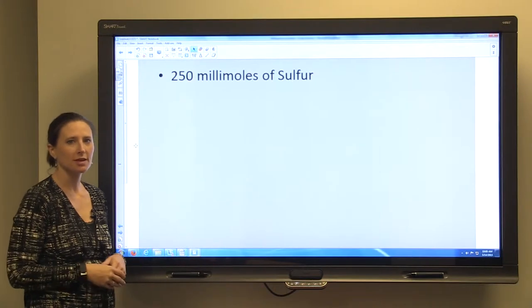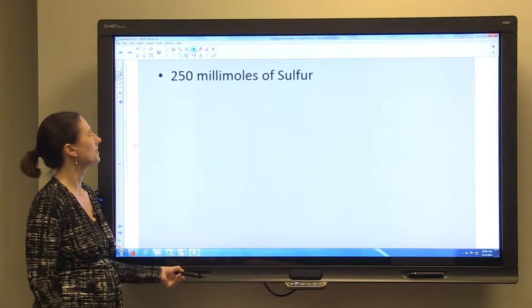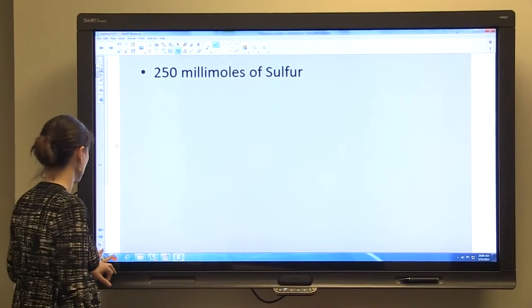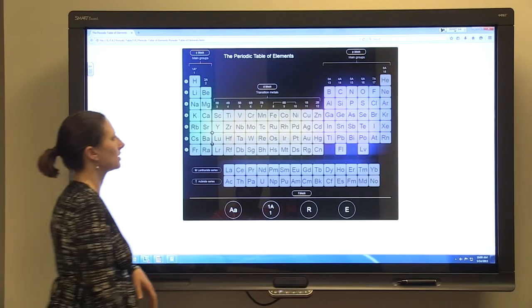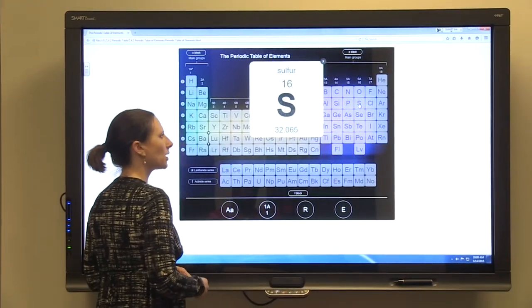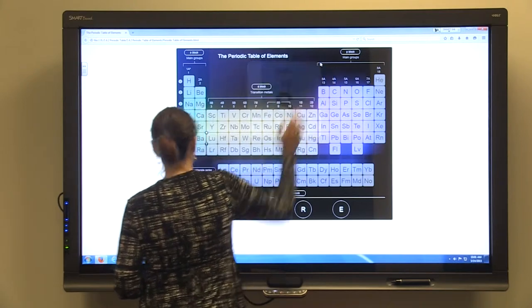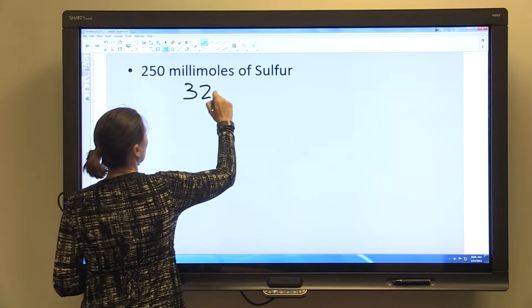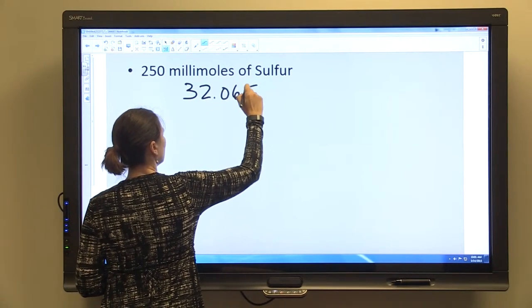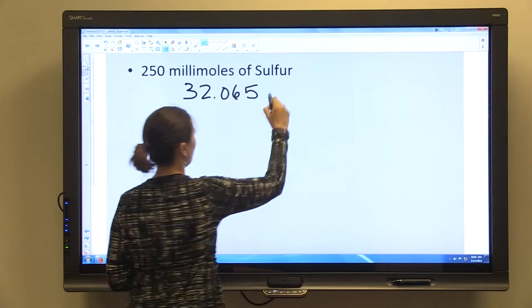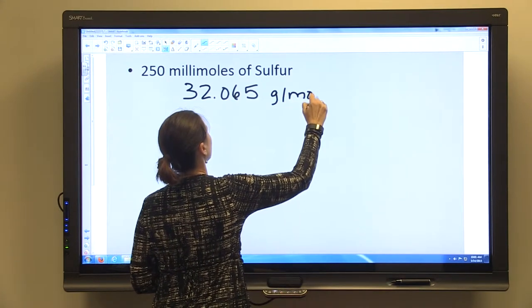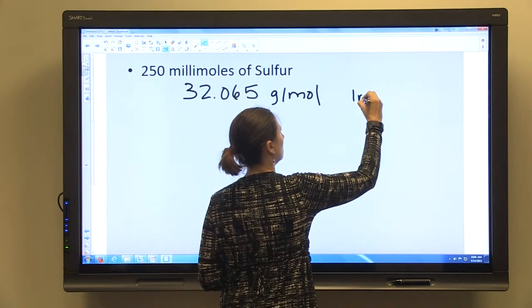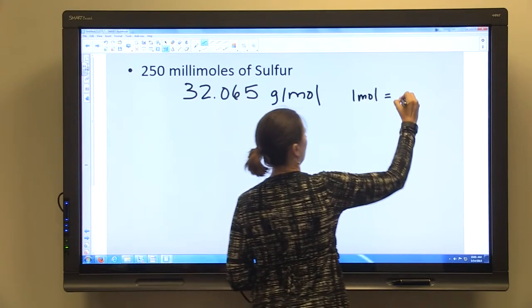So I just want to do one more example of a single element mole problem. And this one, we're looking for the weight of 250 millimoles of sulfur. So again, we'll go to our periodic table. We'll look at sulfur's atomic weight. It's 32.065. So 32.065 grams per mole.